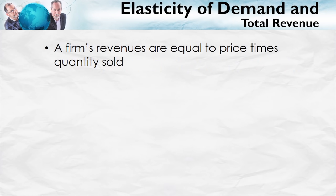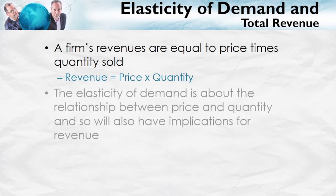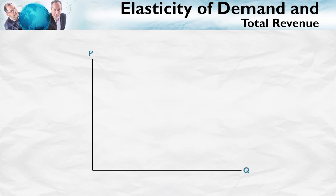We need to cover one more important point about the elasticity of demand, and that is its relationship to total revenue. A firm's revenues are simply equal to price times quantity sold. Elasticity is all about the relationship between price and quantity, so it's also going to have implications for revenue. Let's give some intuition for the relationship between elasticity and total revenue.